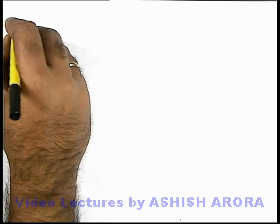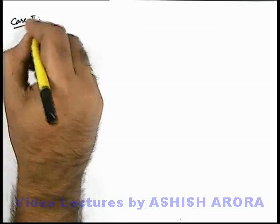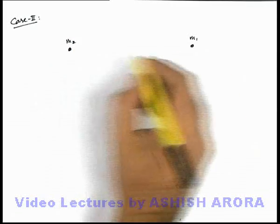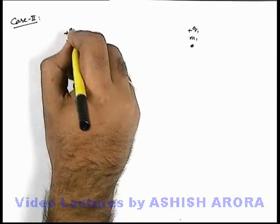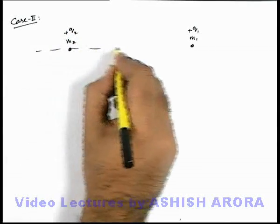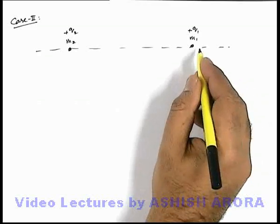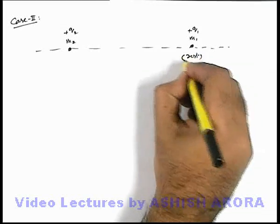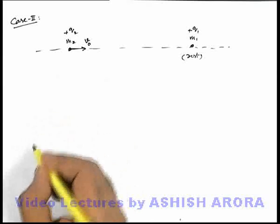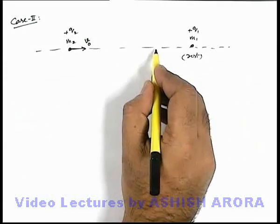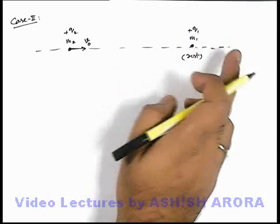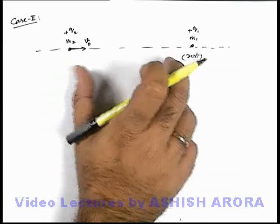Let's discuss the second case for the situation of closest distance of approach. Here we consider two particles with masses m₁ and m₂, neither of which is fixed. They are charged with plus q₁ and plus q₂. Initially they are at large separation, so there is no potential energy. The first particle is at rest and the second is thrown with speed v₀. As the second particle gets closer, they experience electrostatic repulsion, causing the first particle to also start moving.